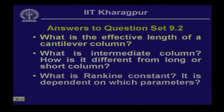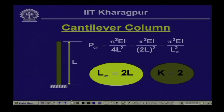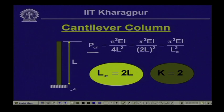Before we go into the discussion on springs, let us look into the answers to the questions posed last time. The first question was: what is the effective length of a cantilever column? In the previous lesson on stability of columns, we saw how to evaluate the critical load using Euler's critical buckling load formula. For different support conditions — both ends hinged, one fixed one hinged, fixed-fixed, or cantilever (one end fixed, other end free) — we need to evaluate the critical buckling load. The question is: for a cantilever of actual length L, what is the effective length?